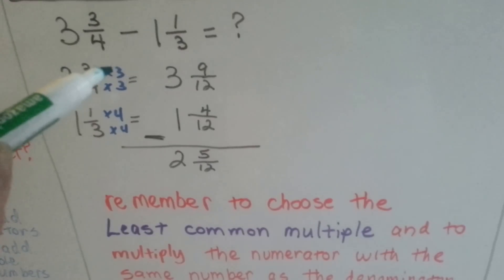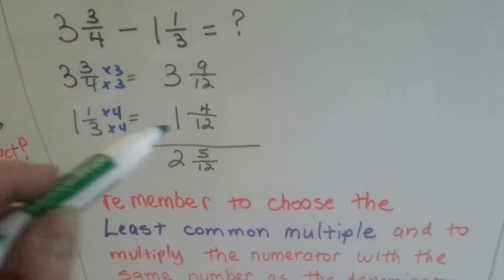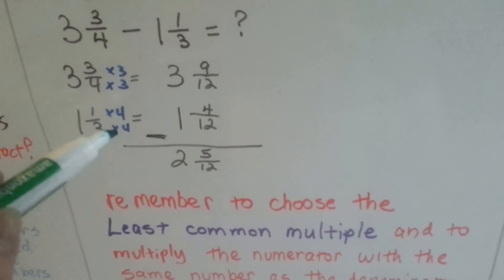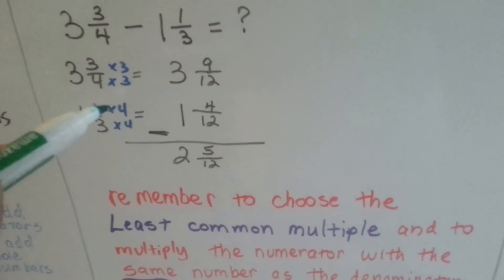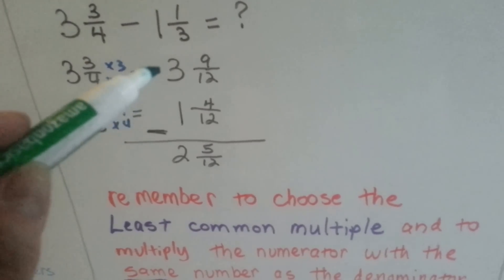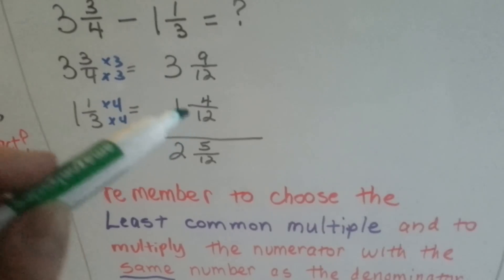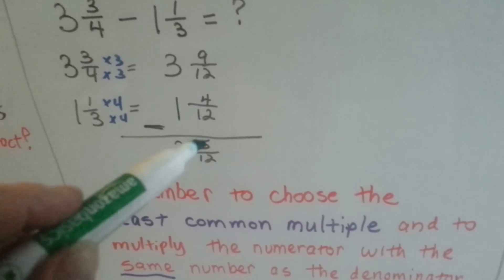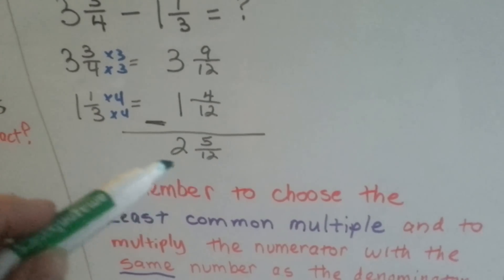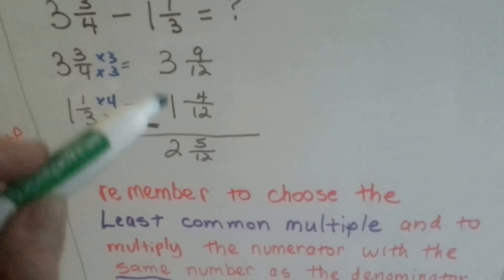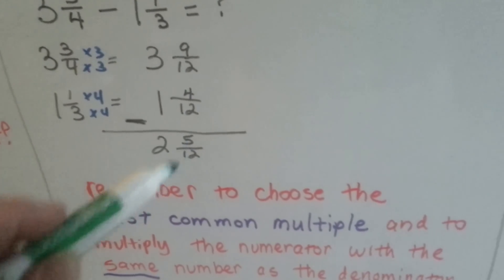3 gets jealous and it wants to be multiplied by 3. What does 3 need to become 12? It needs to be multiplied by 4. The numerator wants to be multiplied by 4 also. So now we have 3 and 9 twelfths minus 1 and 4 twelfths. We subtract the numerators, 9 minus 4 is 5. We slide down the denominator and we subtract the whole numbers and get 2 and 5 twelfths.